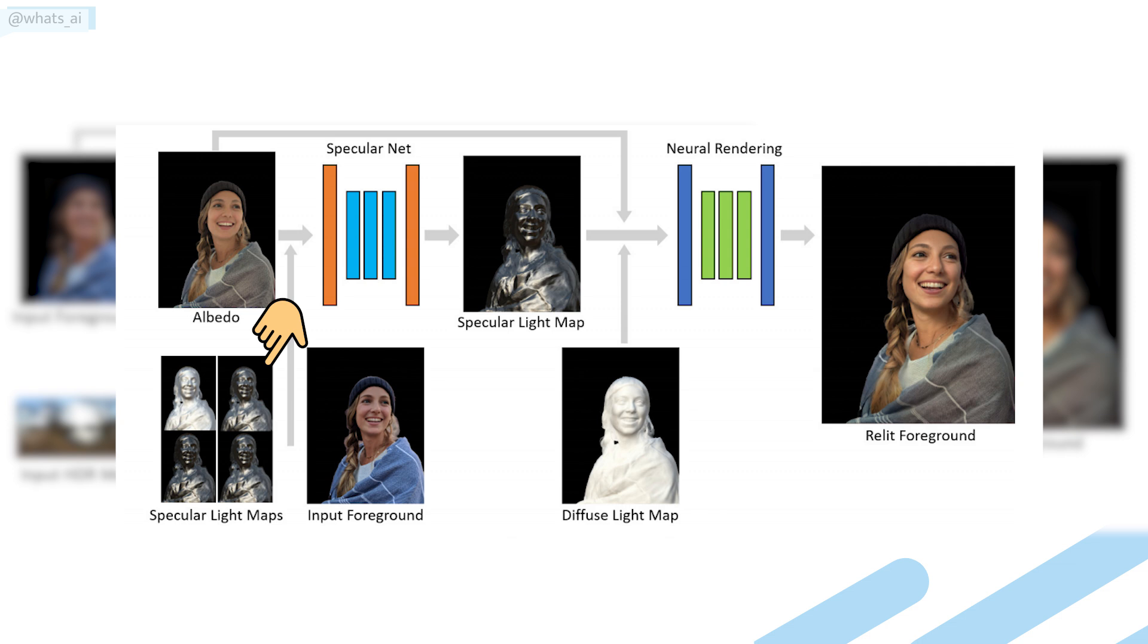Then, these light maps, the albedo image, and the foreground are merged into the final and third network, the shading network. This shading network first produces a final version of the specular light map using the albedo information coupled with all the specular light map candidates we calculated previously. Using this final light map, our diffuse map and the albedo, we can finally render the final relit person ready to be inserted into our new background. As you just saw, all the networks look the same, exactly like this,